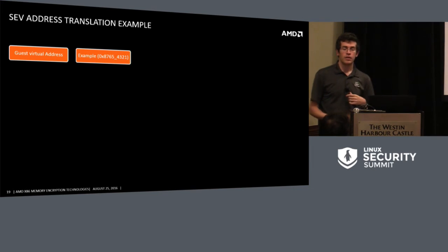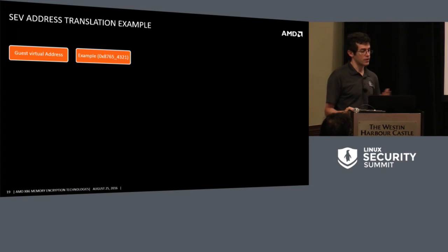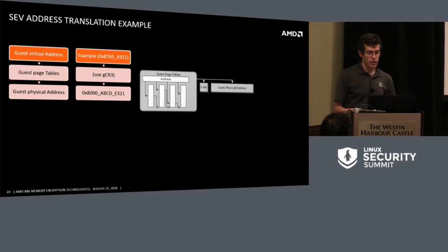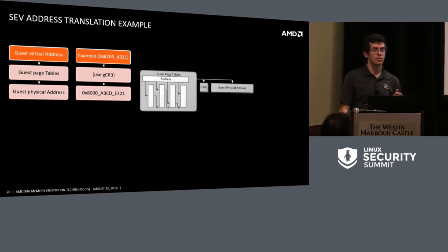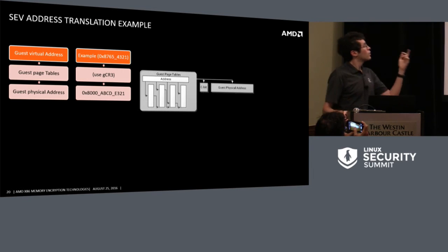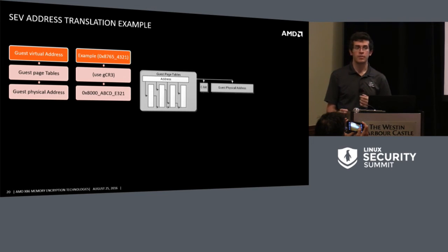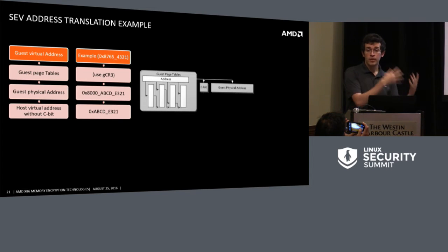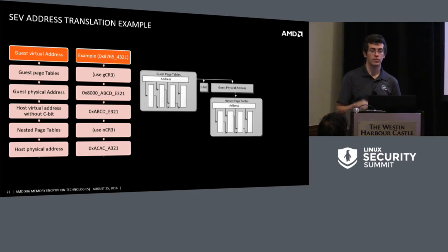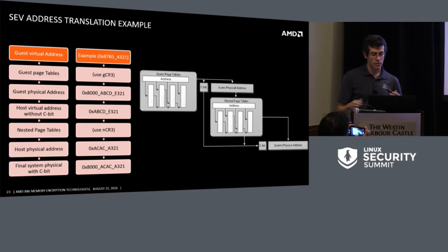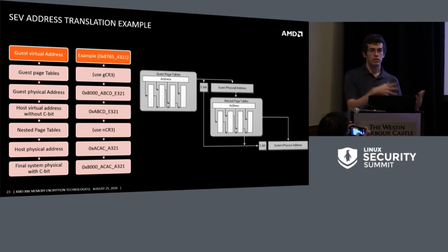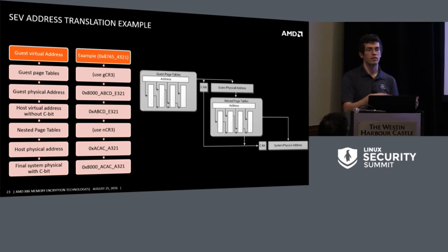Address translation example: starting with a guest virtual address, we translate through guest page tables to a guest physical address. With C-bit at bit 47 set, indicating a private page, the hardware remembers the C-bit, strips it off, takes the host virtual address without that bit, translates through nested page tables to get a host physical address, and then puts the C-bit back on when creating the system physical address — ensuring the access goes to memory as a private guest access.